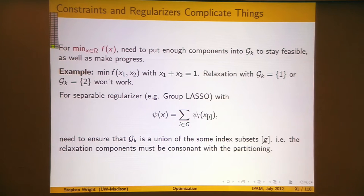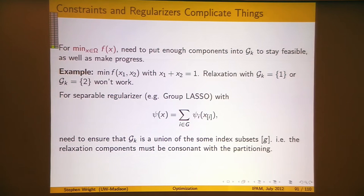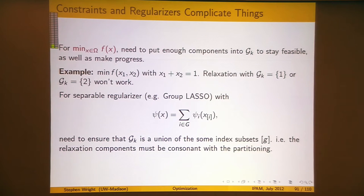Similar issues arise when you're trying to minimize a regularized function like the ones we've been discussing, where the regularizer is a group regularizer — where you break x into sub-vectors and have a regularizer on each sub-vector of x. You kind of have to choose the sets gk that you're taking steps in to be unions of these index subsets. You have to choose the gks to be consistent with this partitioning into regularizers in order for this to work.